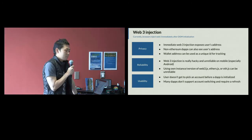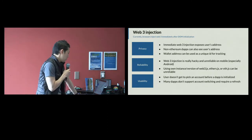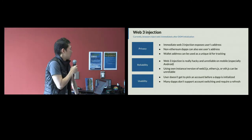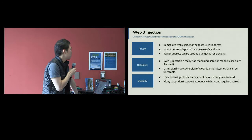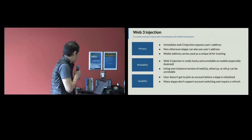Right now, we're all injecting Web3.js, but a lot of people prefer other client libraries like ethers.js or eth.js. It's possible to have multiple instances of those in the same namespace, but it's wasteful and sometimes unreliable. Also, usability: users don't get to pick an account before a dApp is initialized, and not just account but also network — some dApps only run on testnets, some only on mainnet. A way to let users switch network and account before loading the dApp would be really useful.